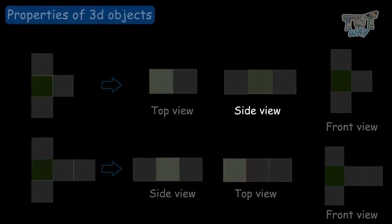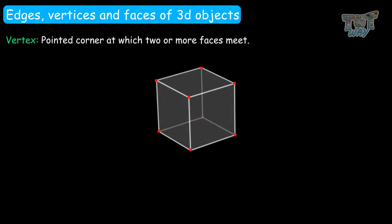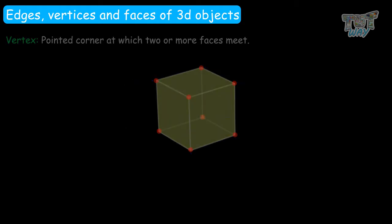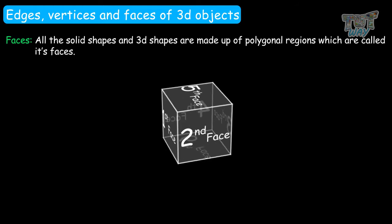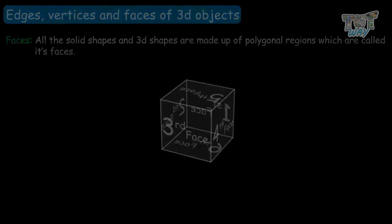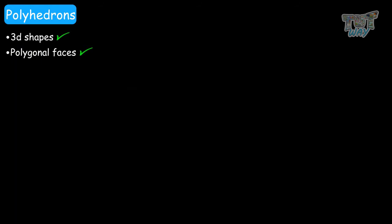Now let's learn what are edges, vertices, and the faces of a 3D object. The edge is a straight line at which two faces meet. A corner is the point where one or more faces meet. All solid shapes, or 3D shapes, are made up of polygonal regions, which are called faces. Now we have to learn what are polyhedrons.